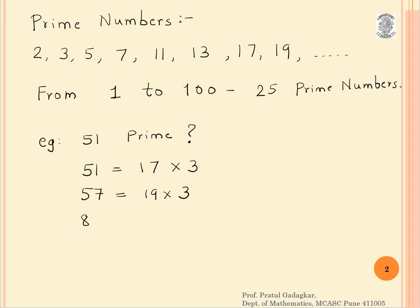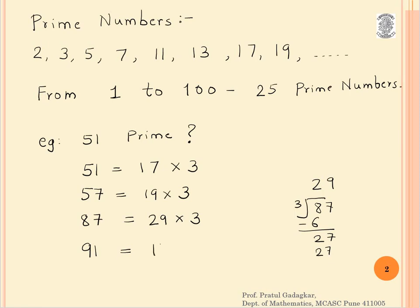What about 87? Is 87 a prime number? If you carefully see, 87 can be divided by 3. When I divide 87 by 3, I get 29, so 29 × 3 = 87. What about 91? 91 is also not a prime number because 13 × 7 = 91. So 91 is also not a prime number.